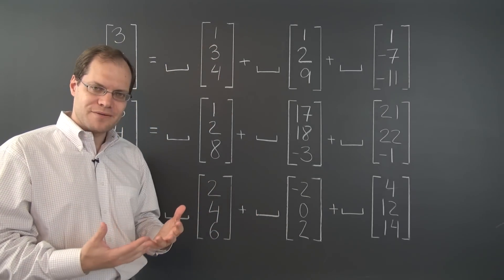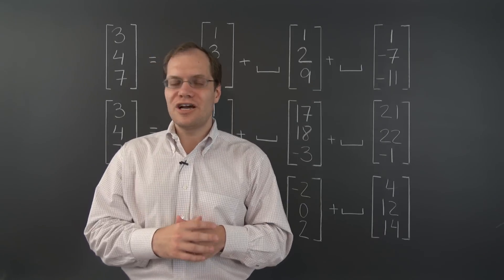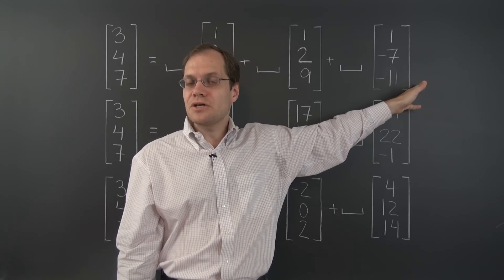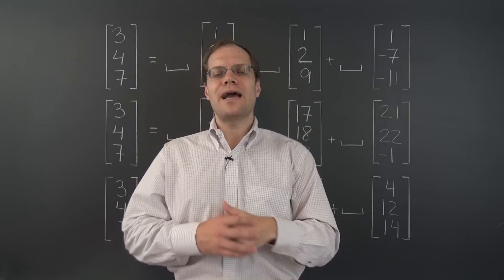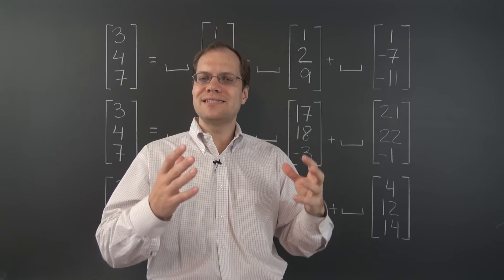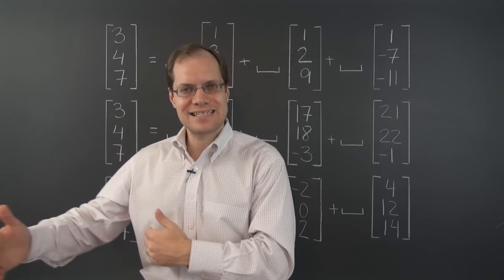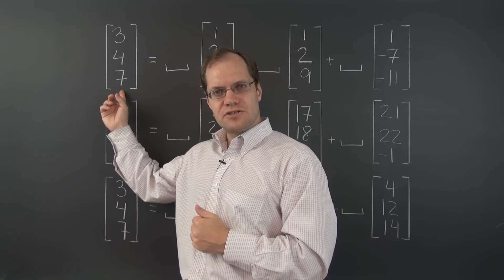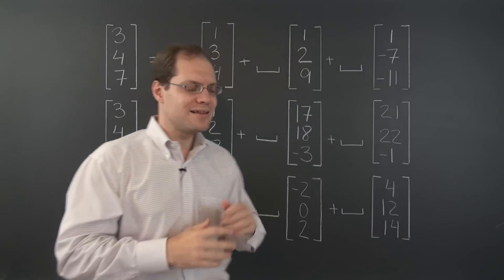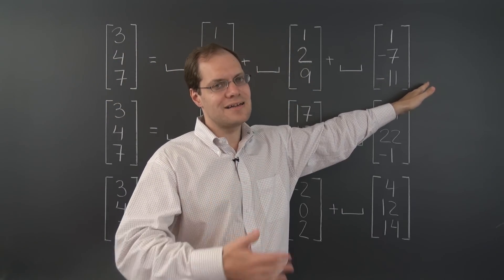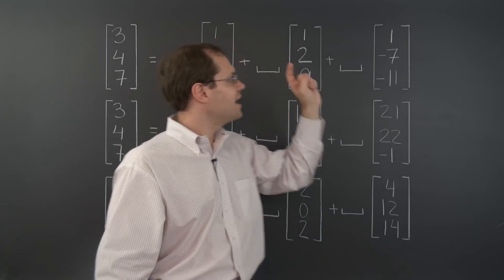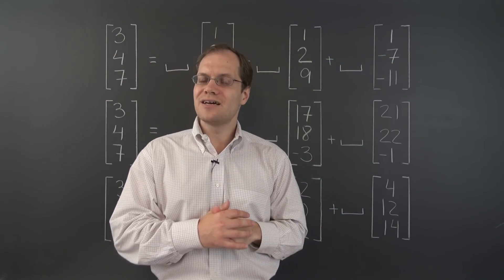So this property, while it's true and is shared by all the decomposition vectors, is actually completely irrelevant. Because in order for the property to be relevant, we have to be able to say that any linear combination of these vectors will have the same property, so that we can build the logical bridge to the conclusion that since the target vector does not have that property, it cannot be represented by a linear combination of the decomposition vectors. Because all linear combinations of decomposition vectors must have that special property. So having 1 as your first entry is not one of those kinds of properties.